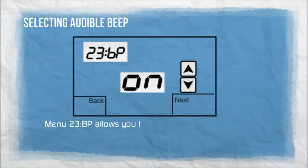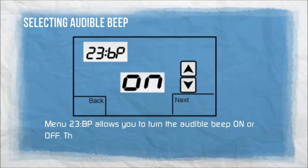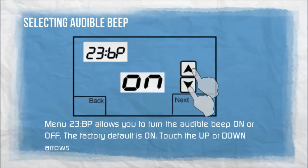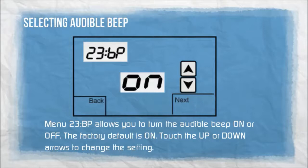Menu 23BP allows you to turn the audible beep ON or OFF. The factory default is ON. Touch the up or down arrows to change the setting.